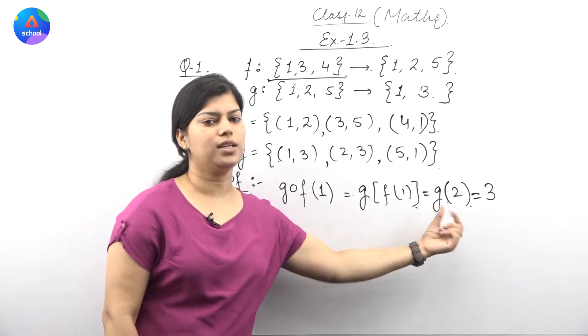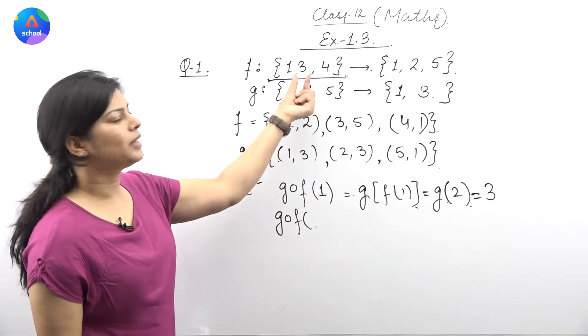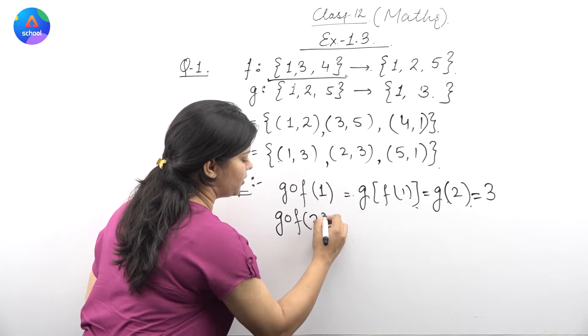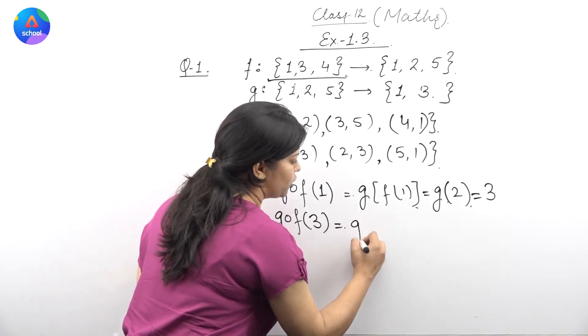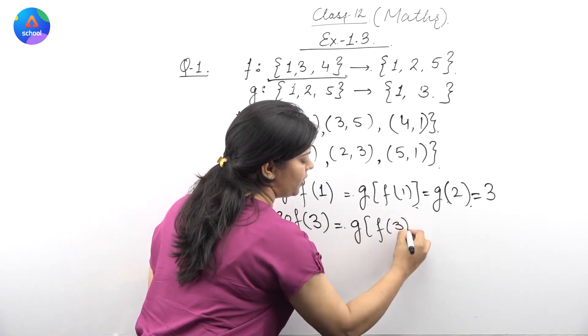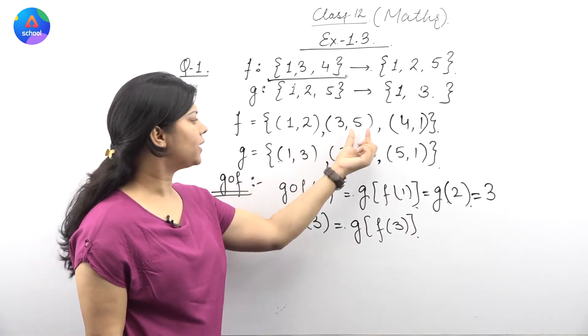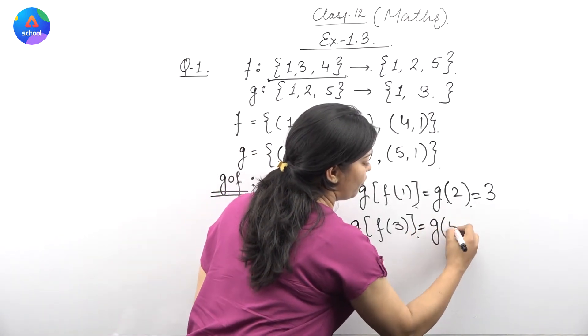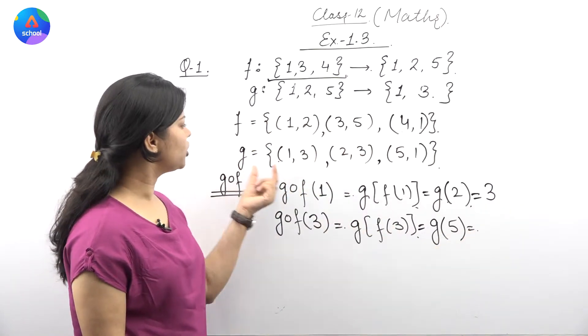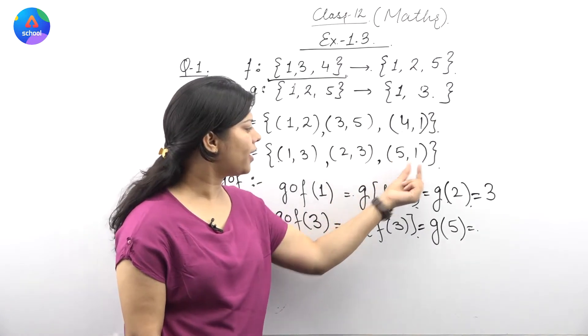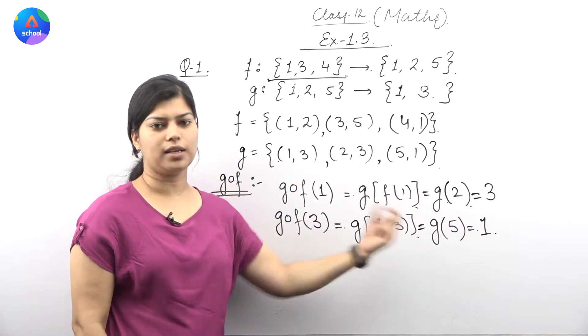Similarly, g∘f for the second element from F's domain, that is 3. So g∘f(3): f(3), the image of 3 under F, is 5. So we get g(5). Under G, the image of 5 is 1. So this equals 1. So g∘f(3) equals 1.